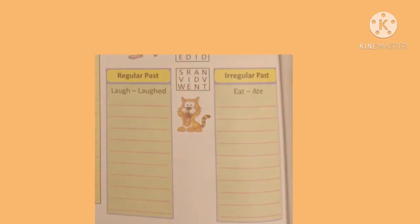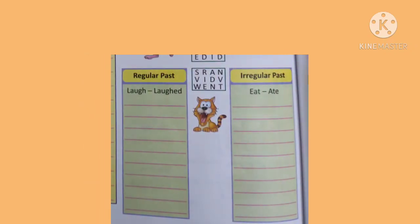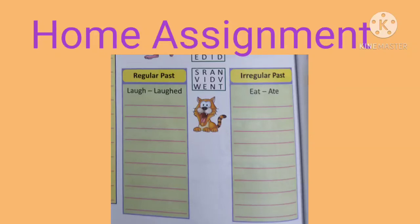Now it's time for the home assignment. In Exercise D you have written the simple past forms of the given verbs — the second form of each verb. Now you have to separate the regular past and irregular past forms into separate columns. That's your homework. That's all for today's class. We will meet with the next chapter in the next class. Till then, take care. Thank you and have a nice day.